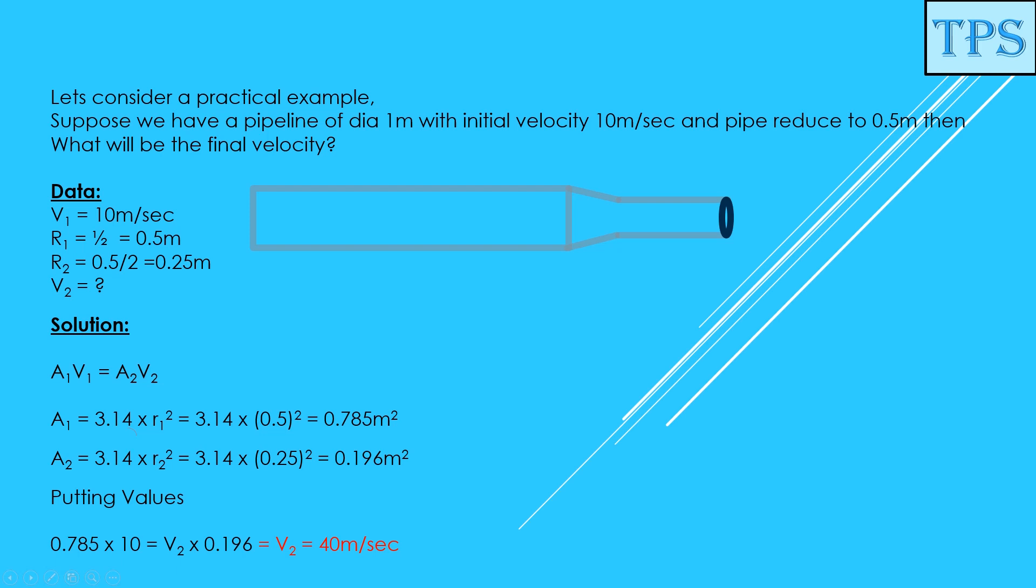According to the equation of continuity, A1V1 equals A2V2. Before putting the values, we need to calculate area A1 and A2.